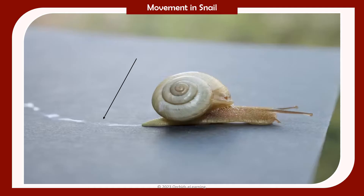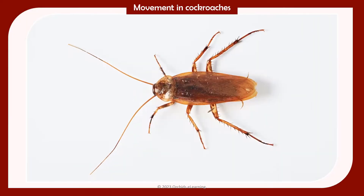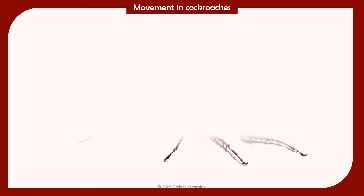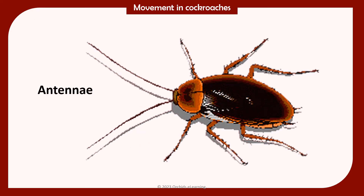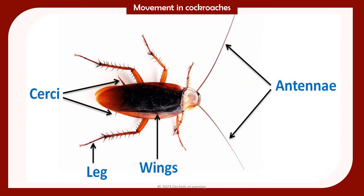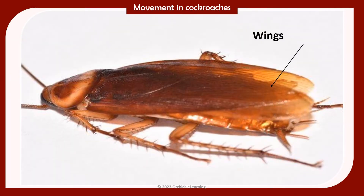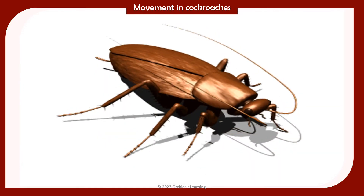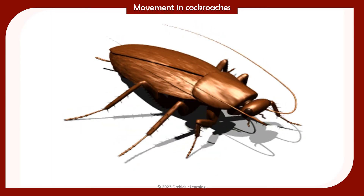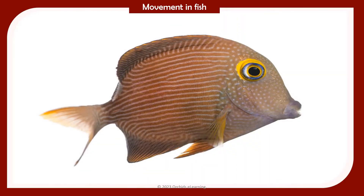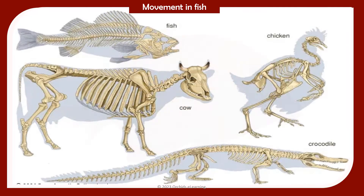A cockroach's body is covered with a hard outer skeleton. Cockroaches have a pair of antennae that help them smell things. They also have a pair of cerci that can detect the slightest of movements and warn them of any danger from behind. Though cockroaches have two pairs of wings, they can only fly short distances. However, they are able to turn and climb very fast. Like all insects, cockroaches have three pairs of legs.